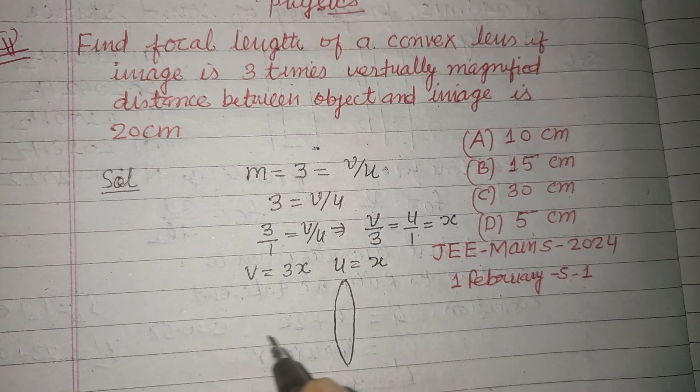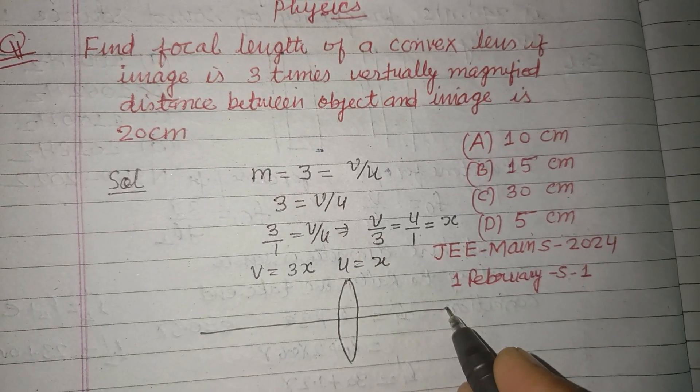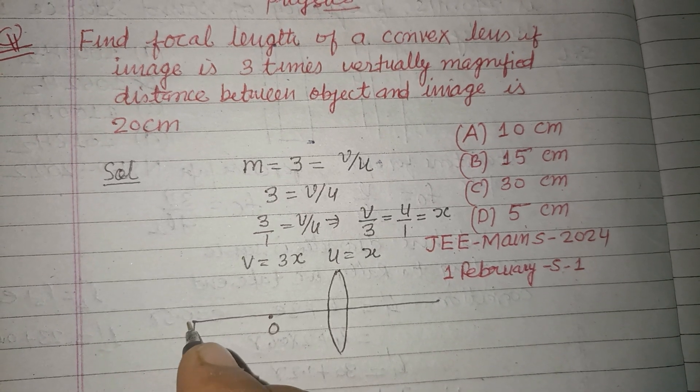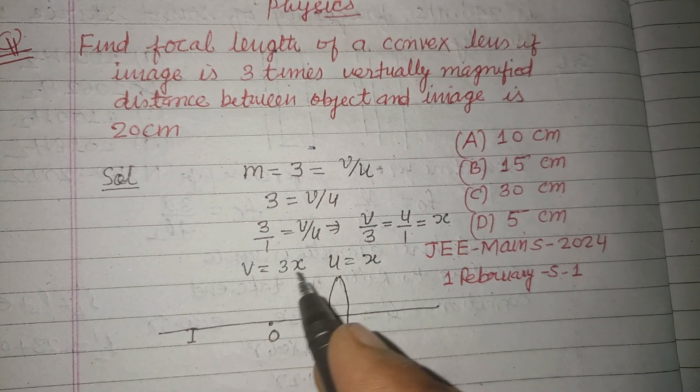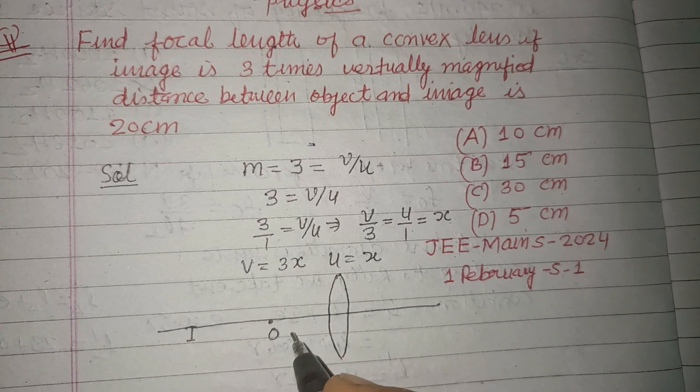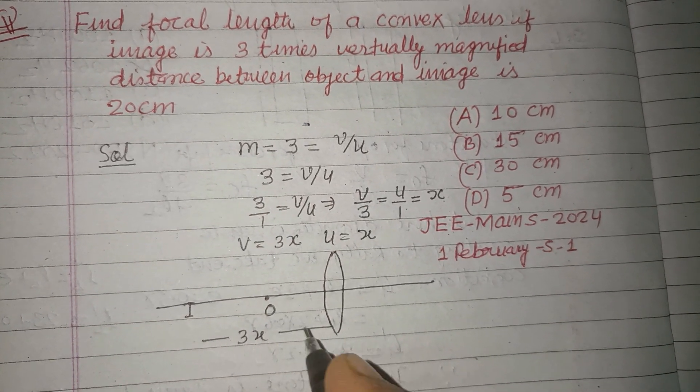Now we make a figure. This is a convex lens, here is the object, and here is the image. So the image is farther than the object. Here it is 3x.